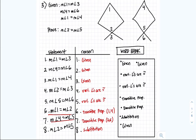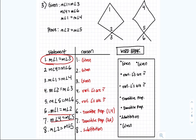For step 6, measurement angle 1 equals measurement angle 2: look at the given statement showing measurement angle 1 equals measurement angle 3, and from what we just found, measurement angle 2 equals measurement angle 3. Since they're both equal to measurement angle 3, it makes sense that measurement angle 1 equals measurement angle 2. That's the transitive property using lines 1 and 4.